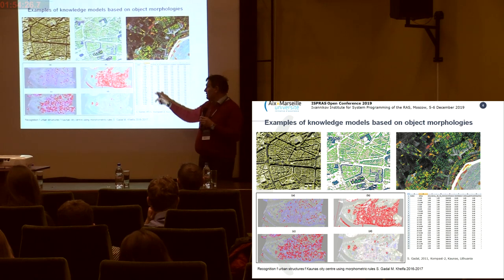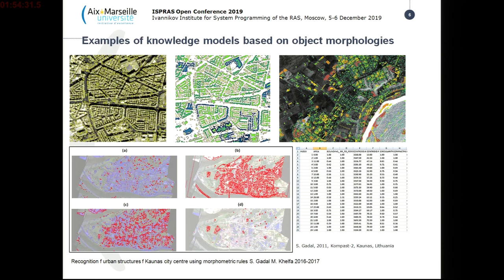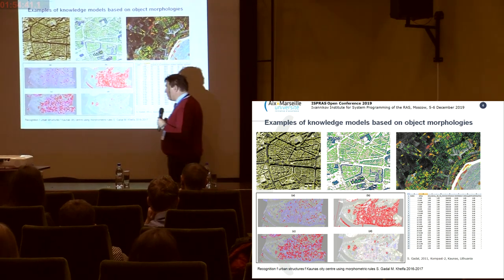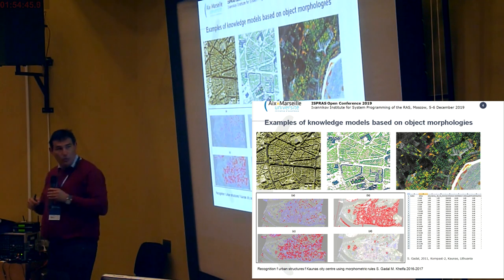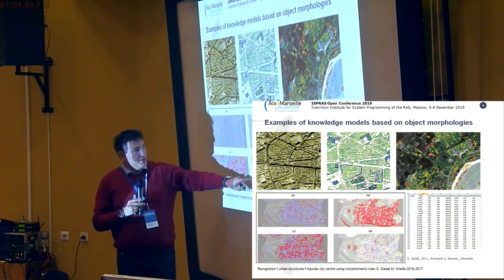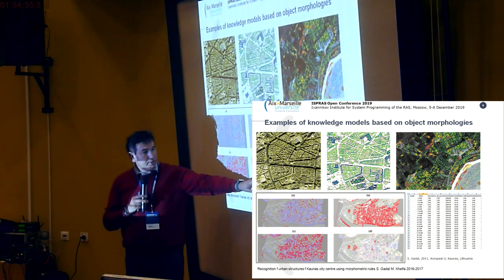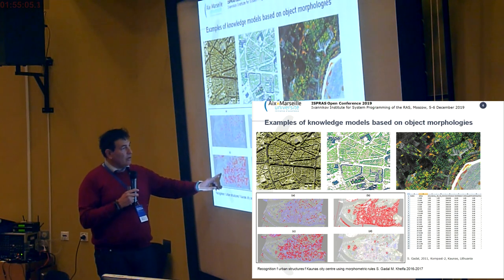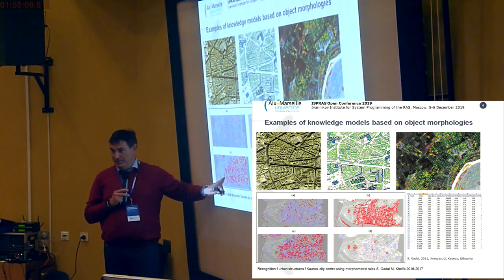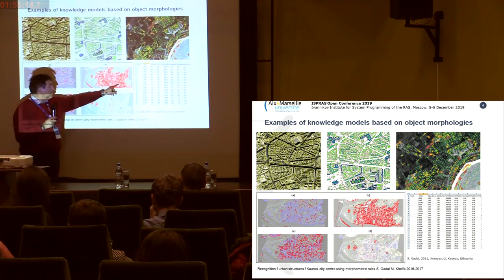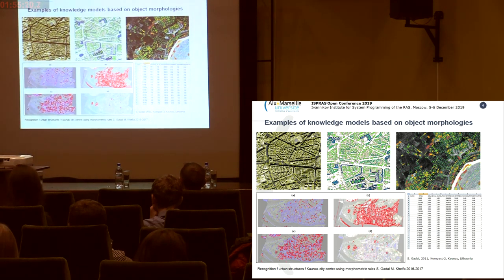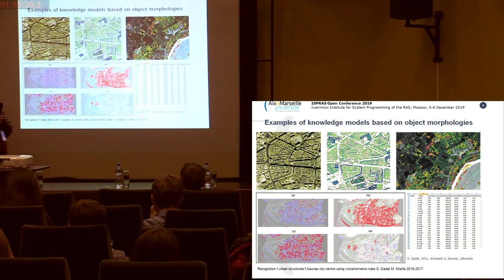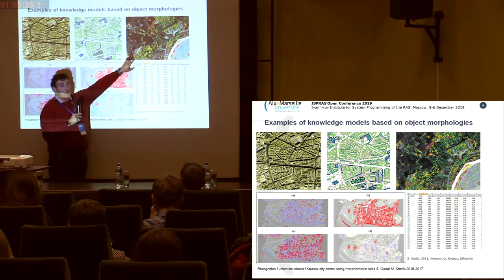For each geographical object, we generate more than 54 to 60 types of geometry to characterize it. We generate rules combining integrations, and by this way we can extract different kinds of objects. For example, we can extract automatically all churches because a church has a specific geometry. We can also extract all buildings built in a certain period, or all reconstructions of buildings after the Second World War. From the morphometric database, we can extract different kinds of buildings and make links with databases about the level of life of populations.